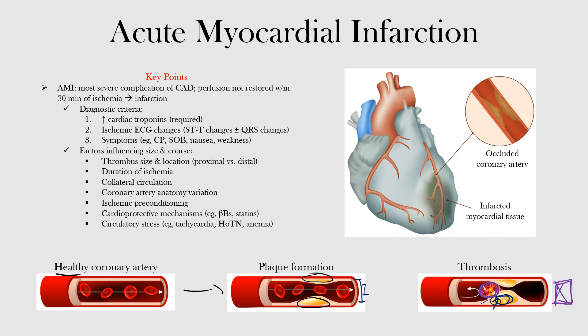Cardiac troponin T and troponin I are the biomarkers typically used because of their high sensitivity and specificity for myocardial injury. It's important to be aware that several other conditions can also elevate troponin levels. Nevertheless, elevated troponin levels are still required to make the diagnosis of acute MI.